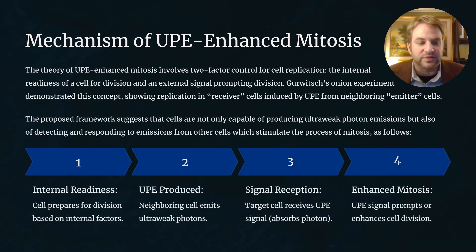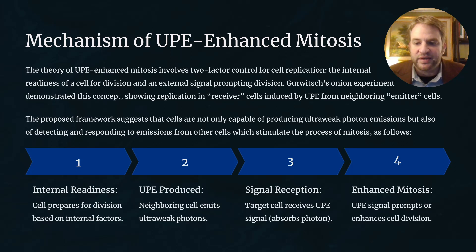The proposed framework suggests that cells are not only capable of producing ultra-weak photon emissions — which is well known — but also of detecting and responding to emissions from other cells which stimulate the process of mitosis. The first step is the internal readiness of the receiver cell, as the cell prepares for division based on internal metabolic factors. Then UPE must be produced from neighboring cells, which emit ultra-weak photons. The signal must be received by the target cell as it absorbs a photon, and as a result, enhanced mitosis can occur.